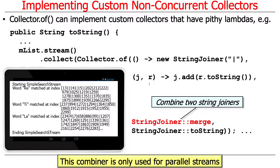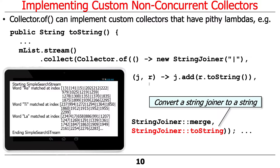The fourth parameter is the finisher, which converts the `StringJoiner` into a `String` by passing in the `toString` method reference. There are two versions of `Collector.of`: one that takes a finisher and one that does not — this example uses the finisher version. The result is a string of all indices separated by vertical bars, produced via the `StringJoiner`.